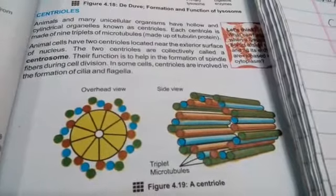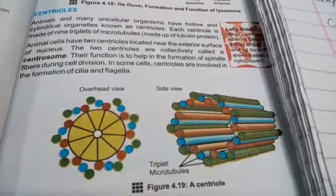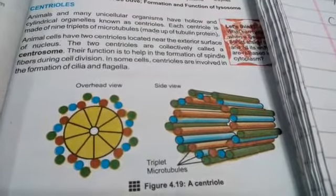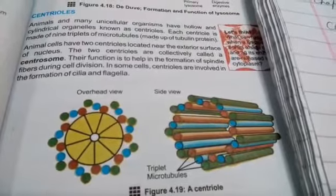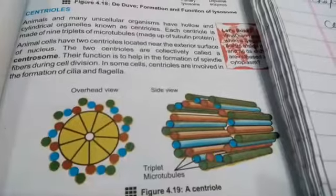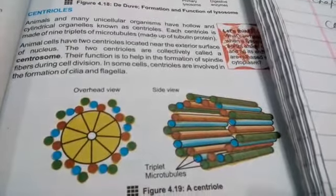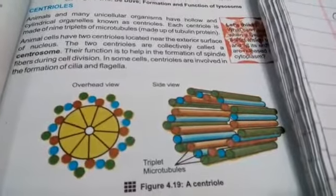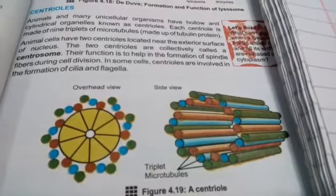In its center, as you will see, there are 9 triplets of microtubules. These triplets are made up of the protein tubulin.